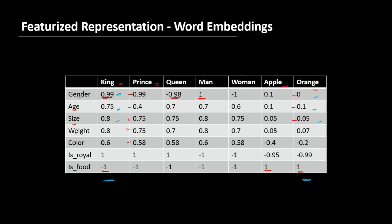Just like how humans can understand the context and the relationship between words. This featurized representation of words is called word embedding. So instead of using the one-hot representation we saw earlier, we can use this featurized vector representation, which are word embeddings. And this way, the computer can better understand the context of the words.